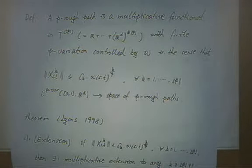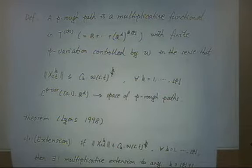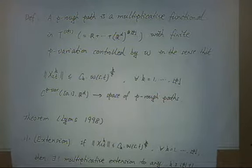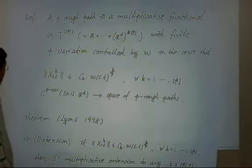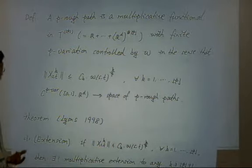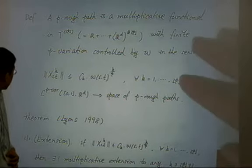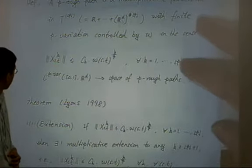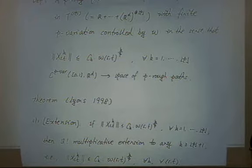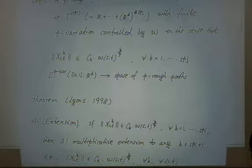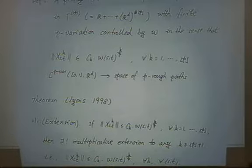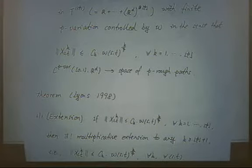The most important thing about this collection X is, it's first proved by K.T. Chen in 1950, it's Chen's identity. This identity holds for every path of bounded variation. If you combine two adjacent intervals together, then the outcome of the whole interval is the tensor product of the two. We call this multiplicative functional with this specific identity.